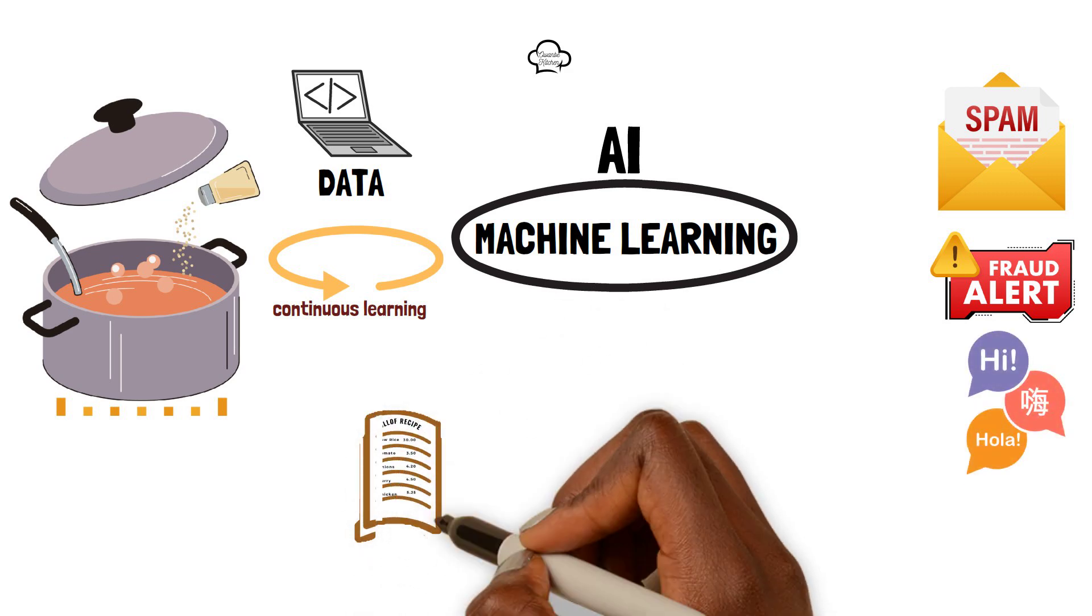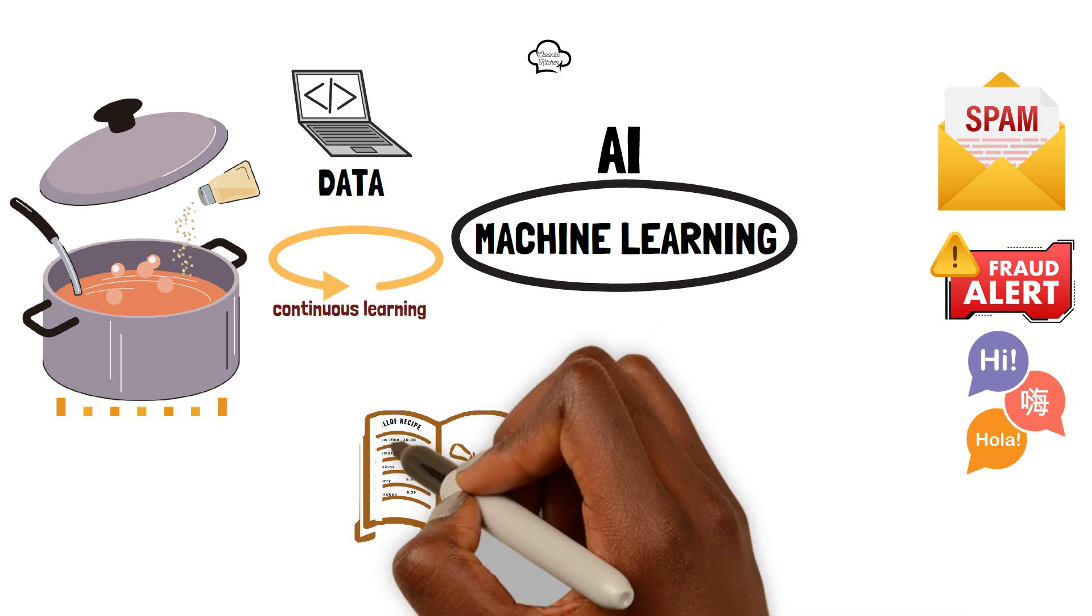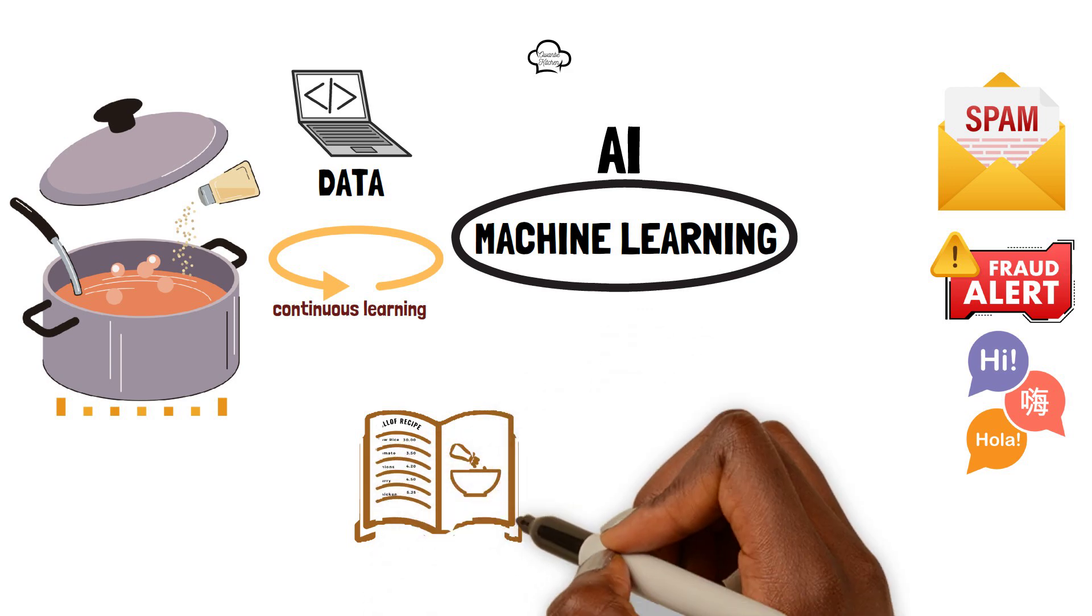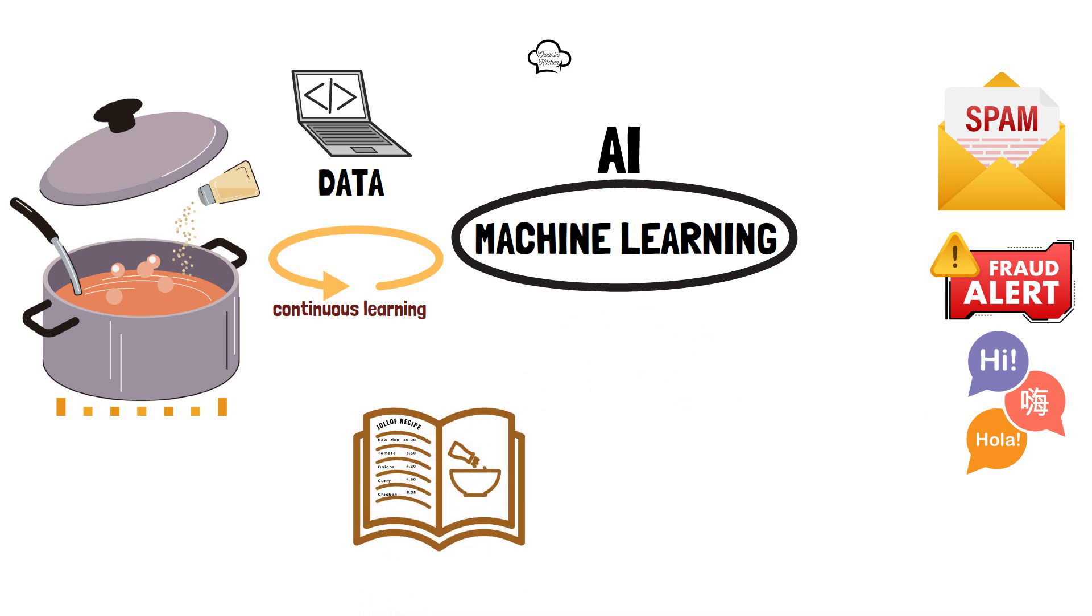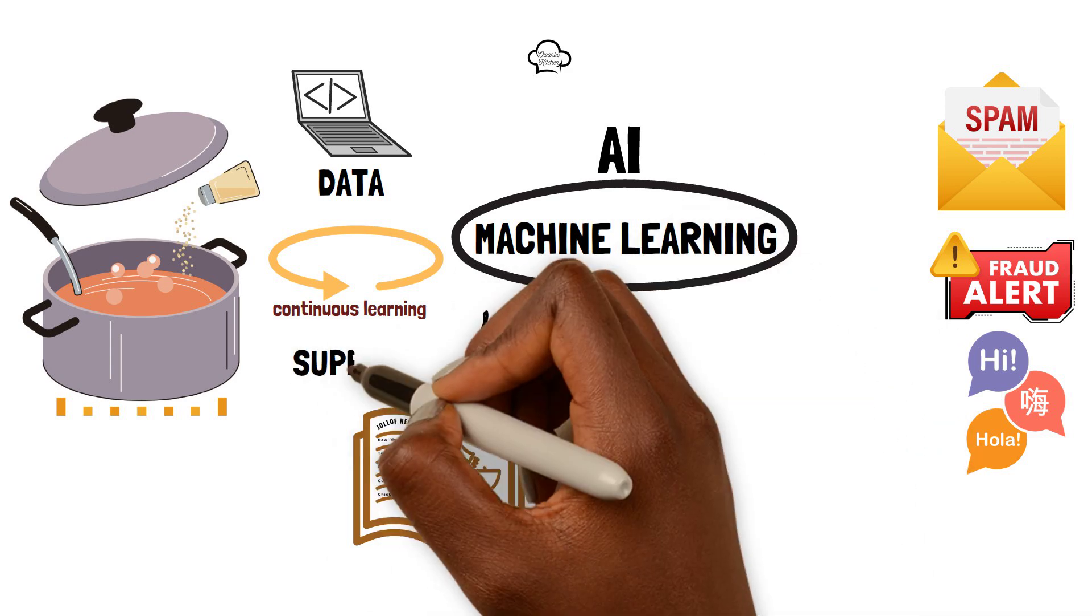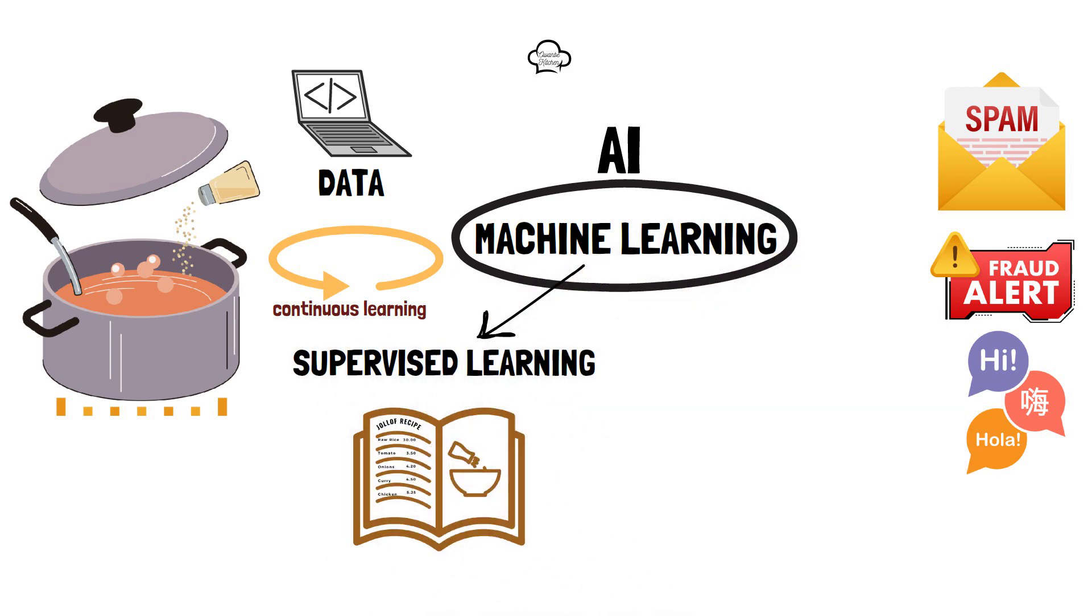Let's assume we have a limited recipe with clear instructions on how to cook our Jollof rice and what the final taste should look like. This labeled recipe is what we call supervised learning, which is a type of machine learning where the computer learns to make predictions or decisions based on these clear instructions or labeled recipes.